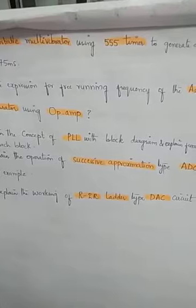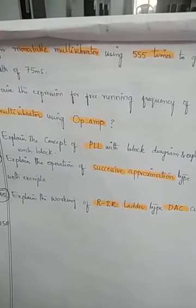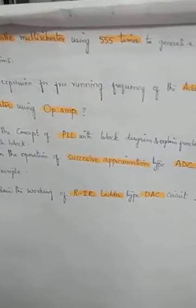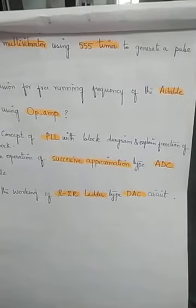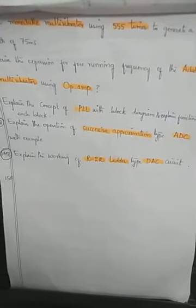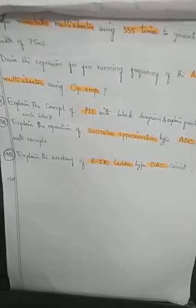Next: derive the expression for free running frequency of an astable multivibrator using operational amplifiers. Using op-amps, you have to explain the free running frequency of an astable multivibrator. Use the operational amplifier — not the 555 timer or transistors directly — and explain the astable multivibrator.